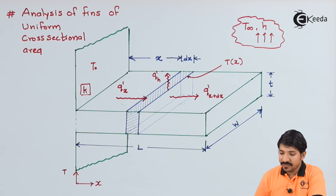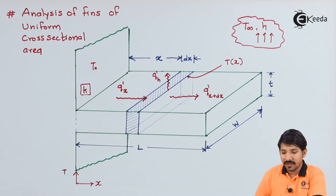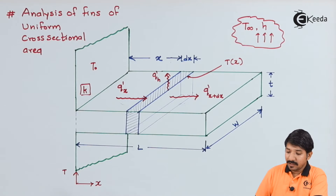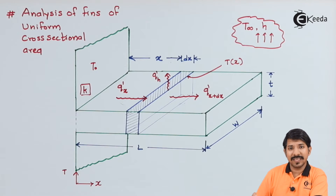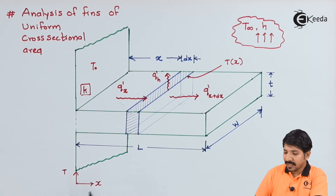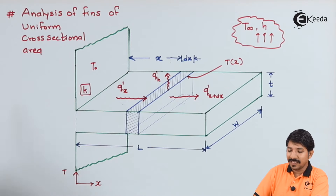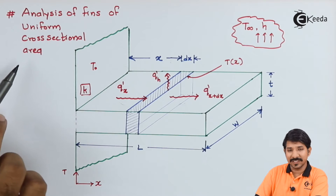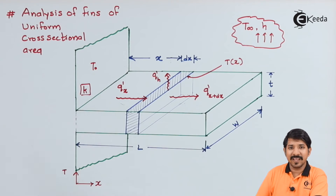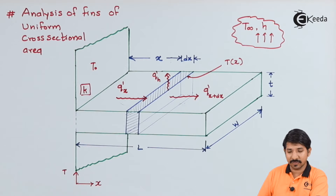In the analysis of the fins or extended surfaces of the uniform cross section area, the fin can be of any shape and size. Depending on its shape and size we will go for the analysis. This analysis is specifically done for the uniform cross section area. The same can be done for the non-uniform or tapering cross section area also.